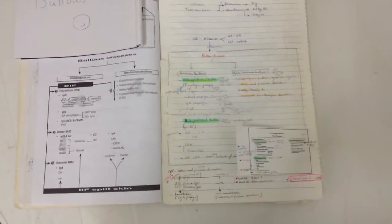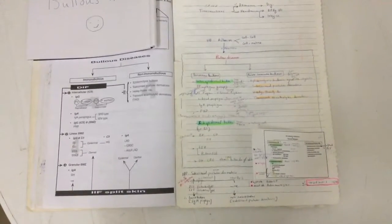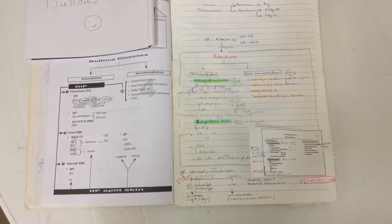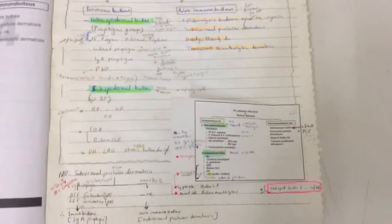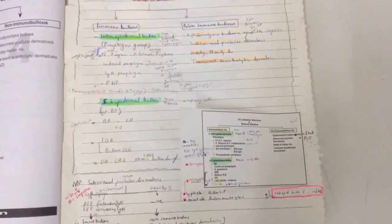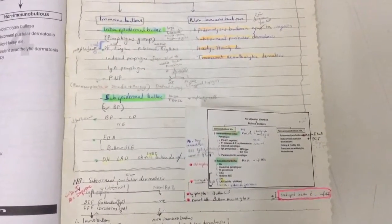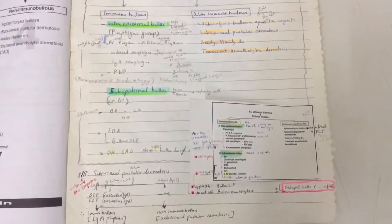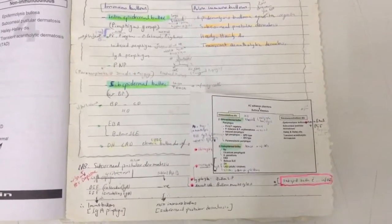Now we will talk about bullous diseases. Bullous diseases are either immunobullous diseases or non-immunobullous diseases. The immunobullous diseases include intra-epidermal bulla like the pemphigus group: pemphigus vulgaris, pemphigus vegetans, pemphigus foliaceous, pemphigus erythematosus, induced pemphigus, IgA pemphigus, and paraneoplastic pemphigus.